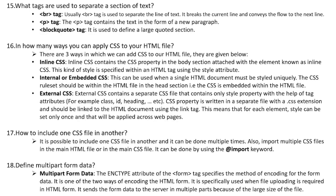Question 15: What tags are used to separate a section of text? The br tag is usually used to separate the line of text — it breaks the current line and conveys the flow to the next line. The p tag contains the text in the form of a new paragraph. The blockquote tag is used for text to define a large quoted section.